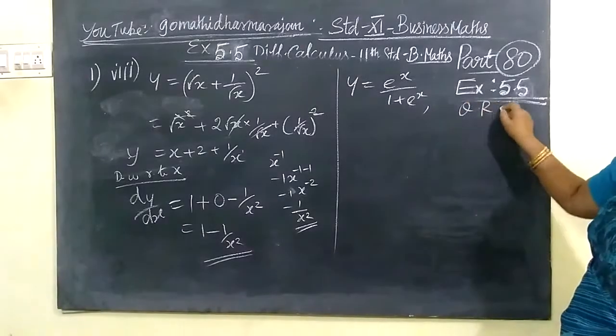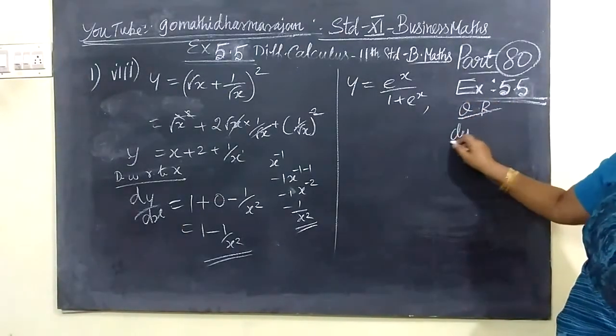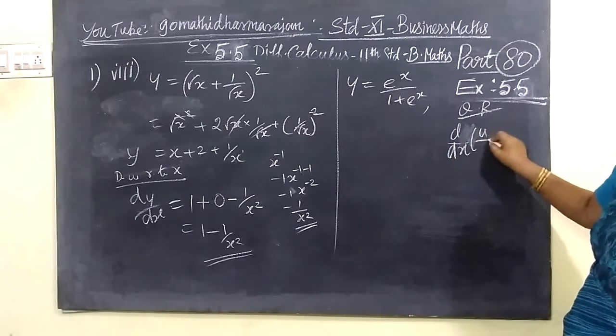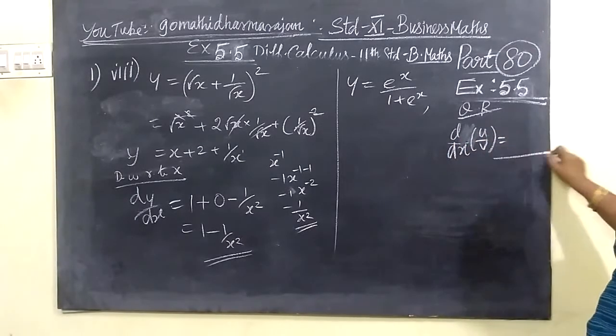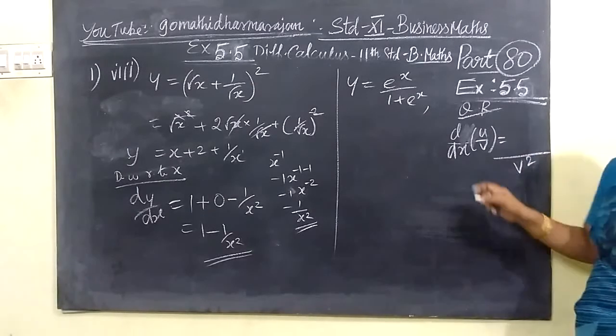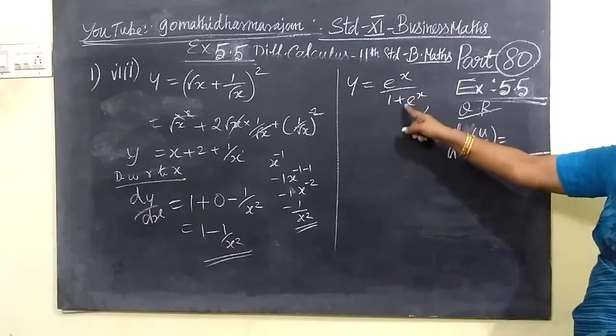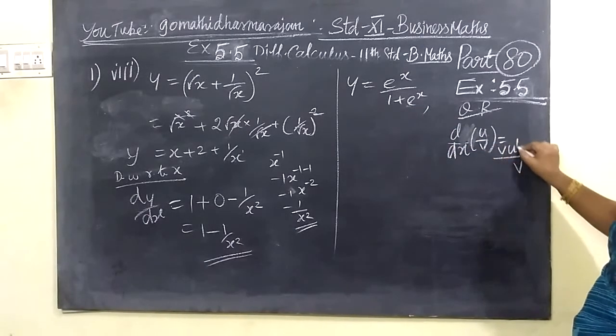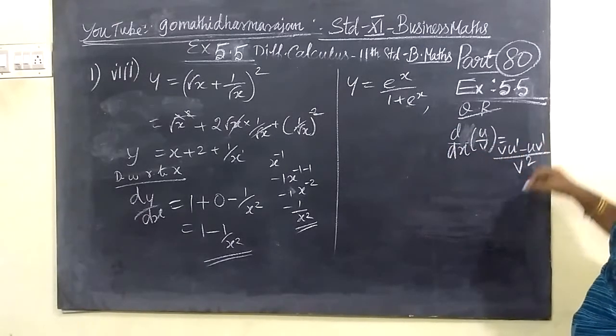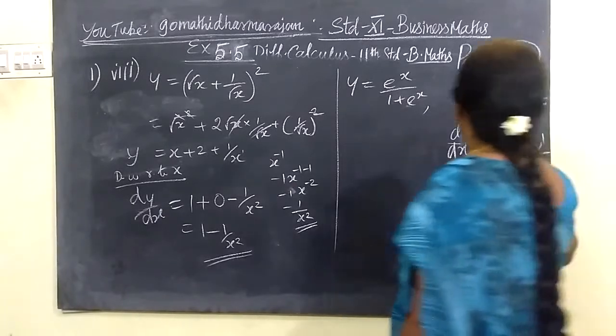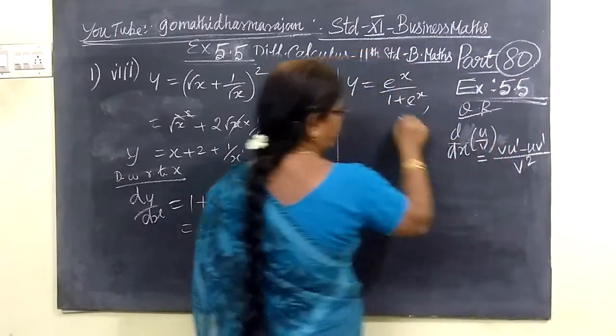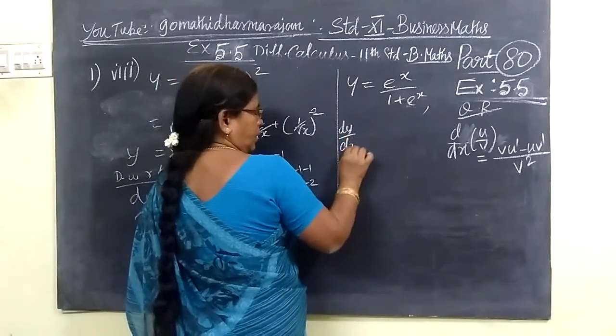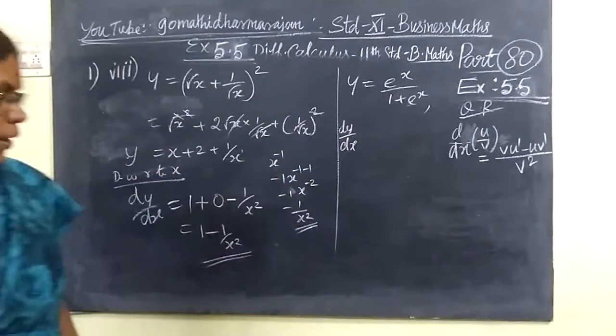What is the U by V method? The first one is the numerator, the denominator. The formula is V times u derivative minus u times v derivative. This is the formula. We will add this.